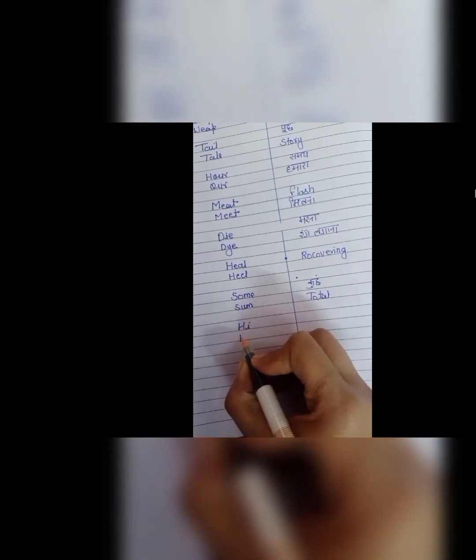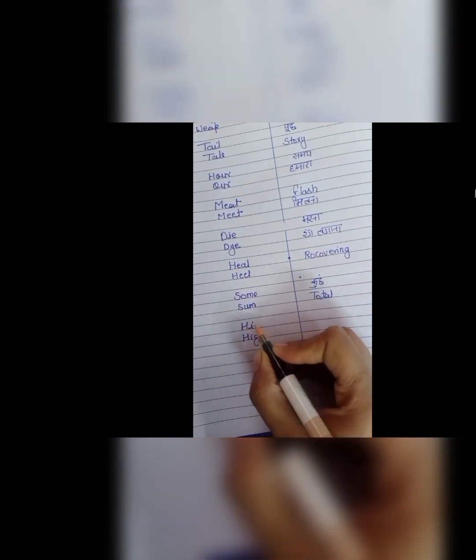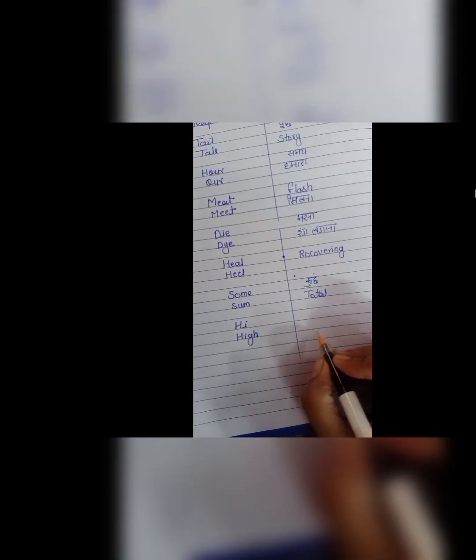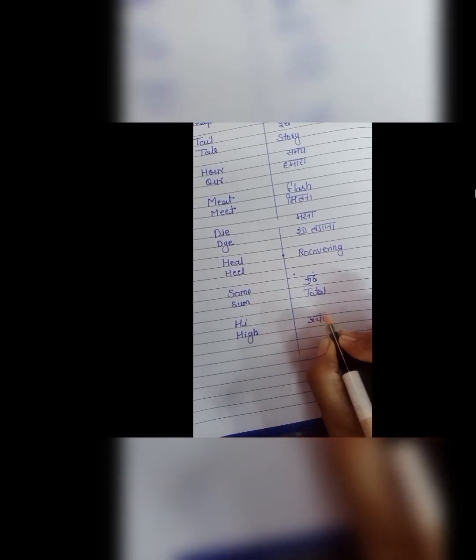And next is hi and high. H, I, hi. Is hi ka meaning se jab hum kisi se milte hain jho hi karte hain usako greeting karte hain woh wala hi. H, I, hi. And H, I, G, H means unchaai. Jaise this hill is very high.